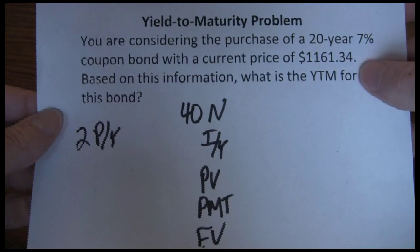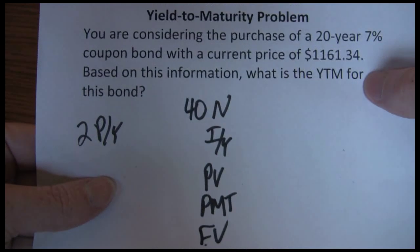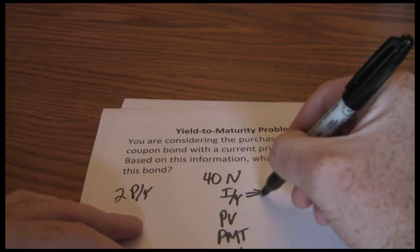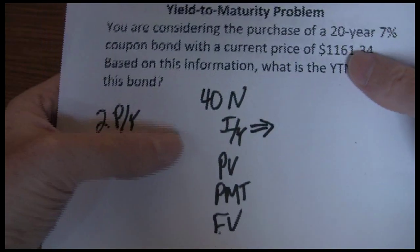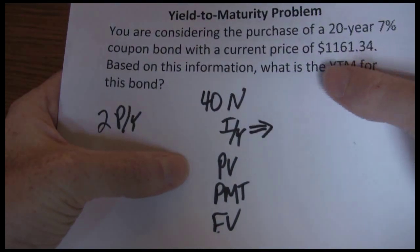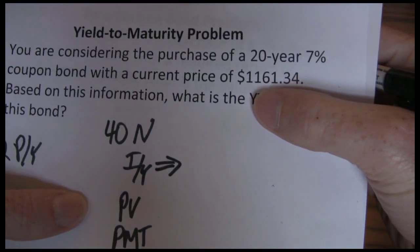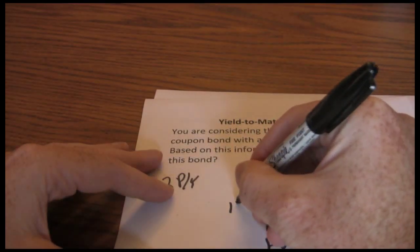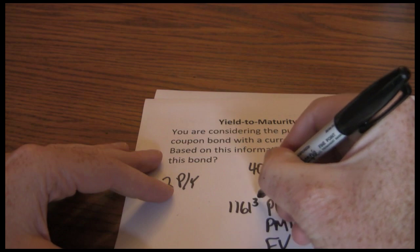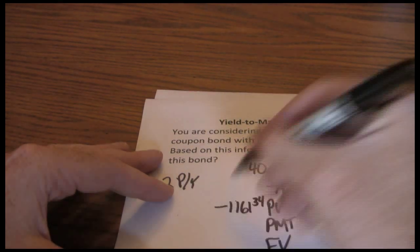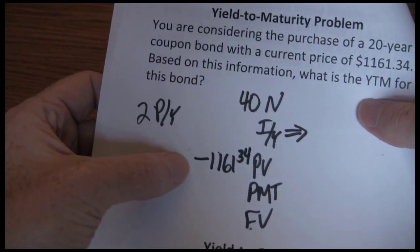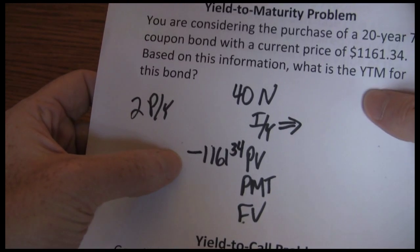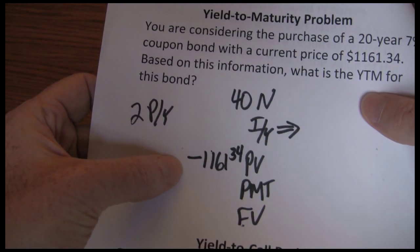Next, we want the interest rate. The interest rate represents our rate of return — that's what we're trying to solve for. So we're going to skip over that for now, just to indicate that's what we're solving for. Our present value is what we're going to have to pay for the bond; it's going to cost us $1,161.34. It's important to note that that's a cash outflow, so it has to be negative. If we don't make that negative, we're not going to get the right answer — it's got to be negative in our calculator.